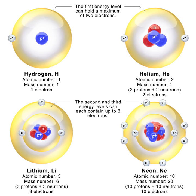Three types of beta decay in competition are illustrated by the single isotope copper-64, 29 protons and 35 neutrons, which has a half-life of about 12.7 hours. This isotope has one unpaired proton and one unpaired neutron, so either the proton or the neutron can decay. This particular nuclide is almost equally likely to undergo proton decay by positron emission (18%) or by electron capture (43%), or neutron decay by electron emission (39%).